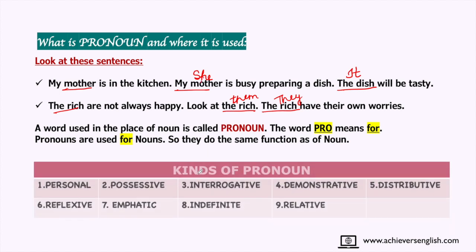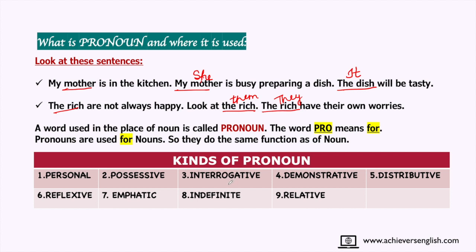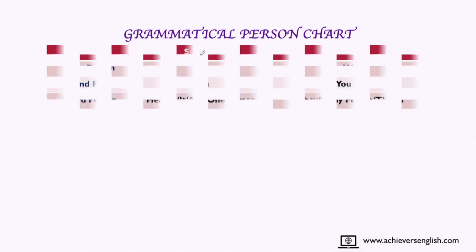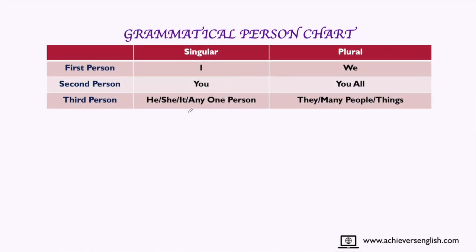Pronouns are of different kinds: personal, possessive, interrogative, demonstrative, distributive, reflexive, emphatic, indefinite, and relative. Before we begin with the first kind, we should see what the grammatical person chart is. This chart will not only help you in understanding pronouns but will also help you in picking out all the parts of speech.